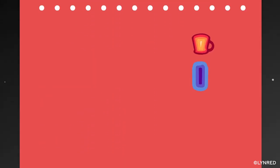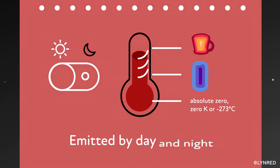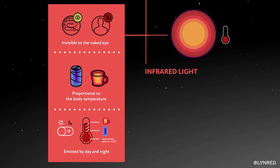Any body with a temperature higher than absolute zero, zero Kelvins or minus 273 degrees Celsius, emits thermal radiation by day and night. The higher the body's temperature, the closer this radiation will be to the white light segment.